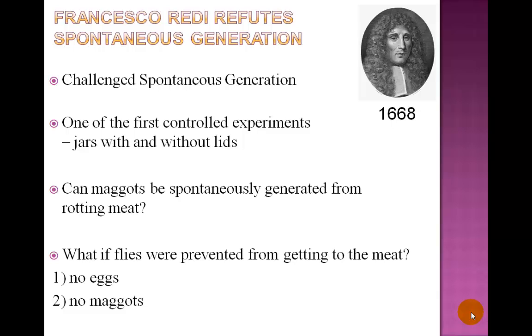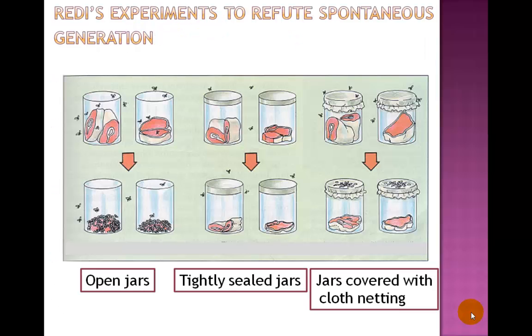Redi predicted that if flies were prevented from getting in contact with the rotting meat, there would be no eggs and therefore no maggots would hatch. Now, let us see what actually happened. To demonstrate his experiment, Redi first placed rotting meat into six sets of jars.